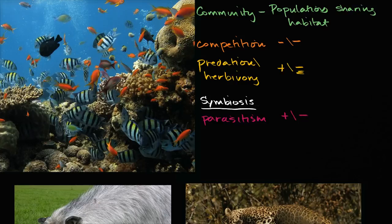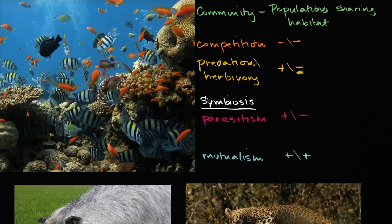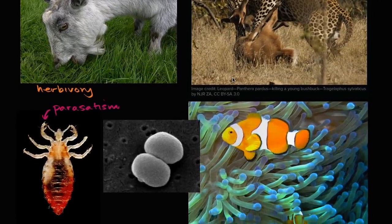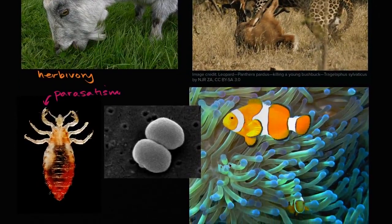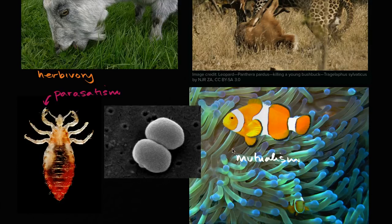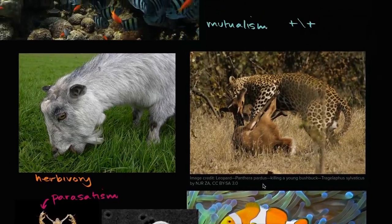Another type of symbiosis is mutualism, where both sides benefit. This is often what people mean colloquially when they say symbiosis. An example of mutualism is a clownfish living within a sea anemone: the sea anemone provides the clownfish shelter, while the clownfish keeps away other fish that might eat the sea anemone. Both organisms benefit from that interaction — that is mutualism.